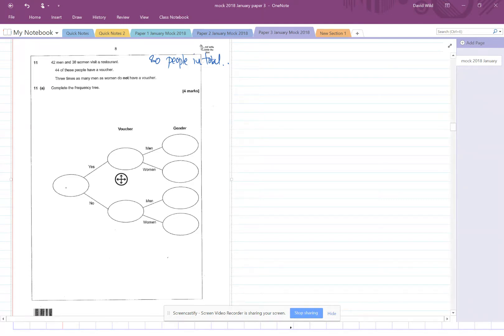So this thing here is out of 80. There are 80 people and those 80 people are split into people who've got a voucher and people who haven't. So it says 44 of these people have a voucher. So yes, 44 of those. How many are left? Be careful, it's not 38. It's whatever's left over from 44 subtracted from 80, which of course is 36.